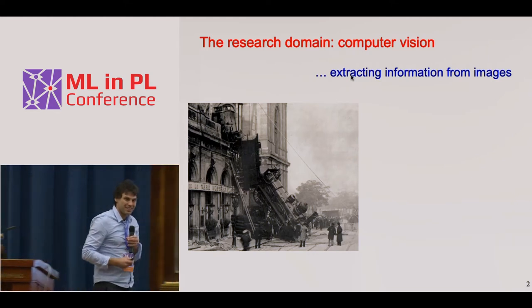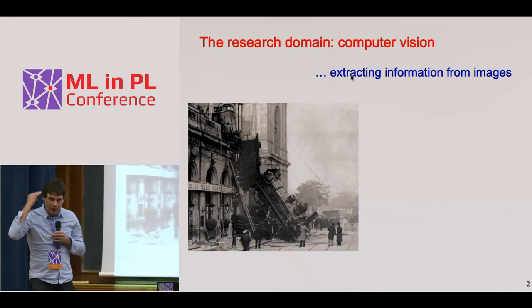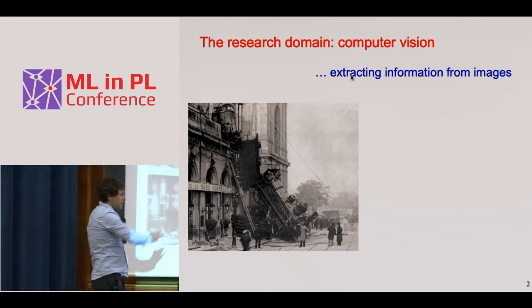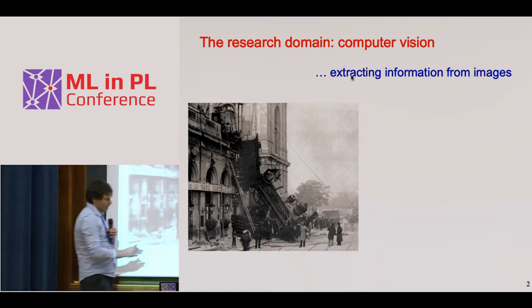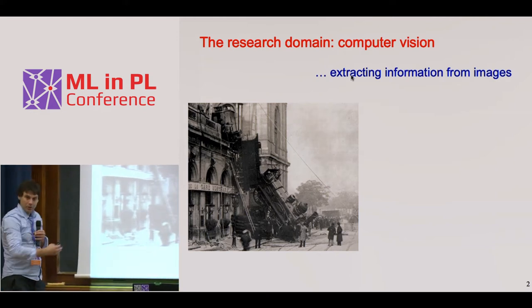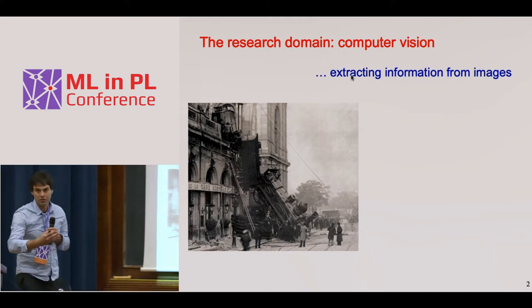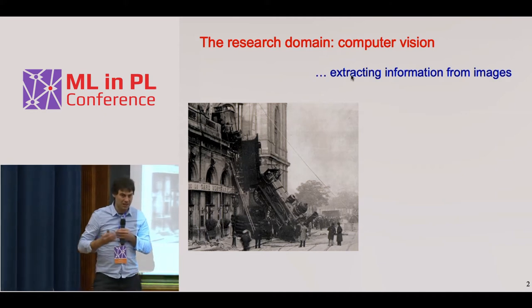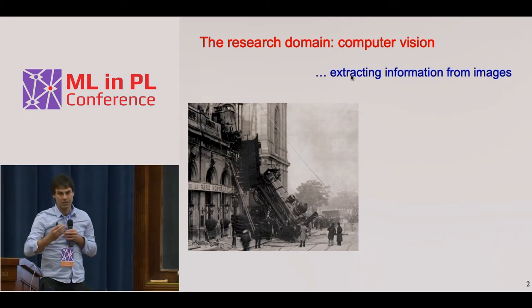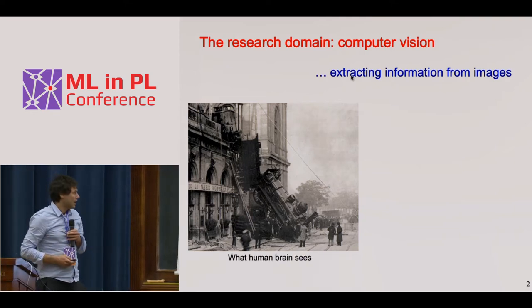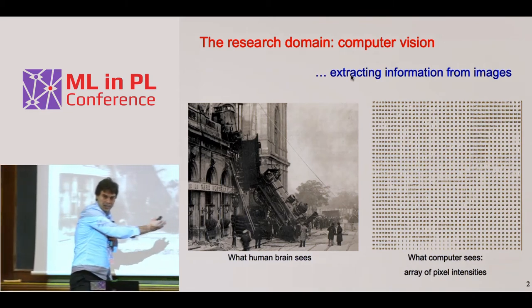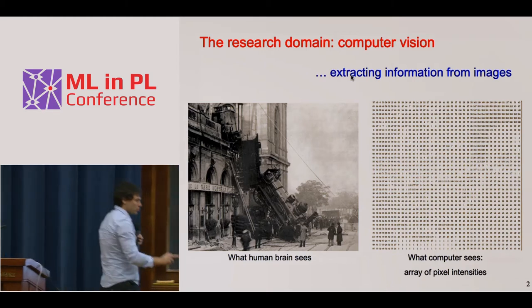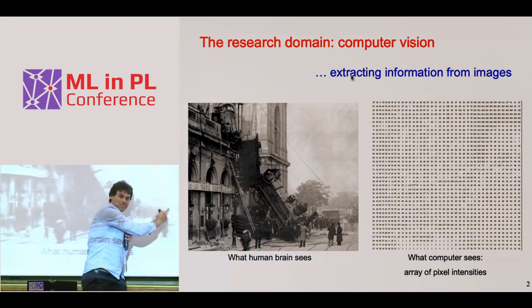Computer vision aims at extracting information from images. For humans, we do this very well. You can look at an image and easily understand the individual objects like people or a train, what has happened in the scene, and what possible interactions you could do in the scene. Yet for computers, this level of visual understanding is still far ahead of us. The input to a computer algorithm is a matrix of pixels, where the individual numbers are pixel intensities.